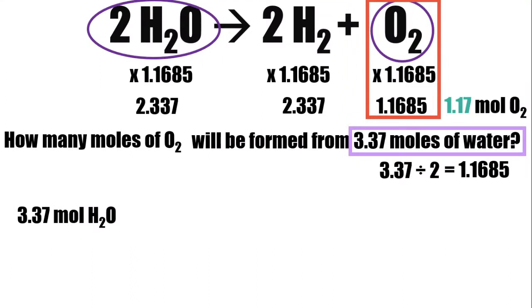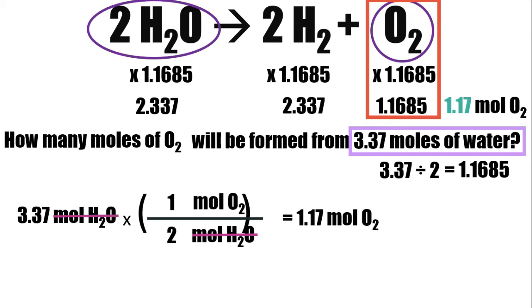Now, let's have the other way, the dimensional analysis. So we start with the given. Then you have to use the molar ratio. In the bottom, you will put the unit of the given, which is mole H2O. Then copy the coefficient from the balanced chemical equation. Then you copy the unit of what is being asked in the top, plus its coefficient, which is 1. So you will have 1 mole O2 in the top. Look how the units cancel, which will give us 1.17 mole of oxygen. So you have the same answer.